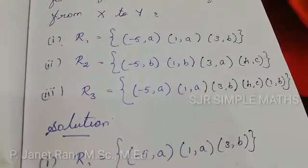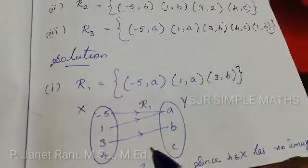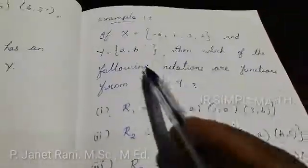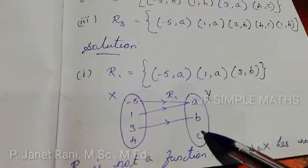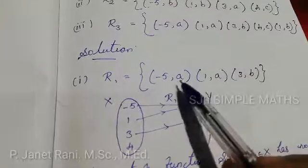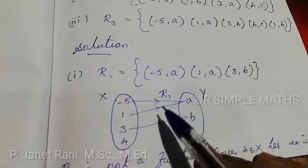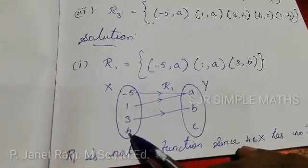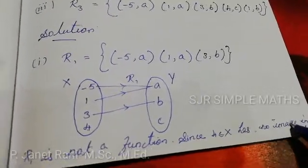First, R1. The domain elements from X are -5, 1, 3, and 4. In R1, the relation has (-5, a), (1, a), (3, b). The element 4 belongs to X but has no image in Y.